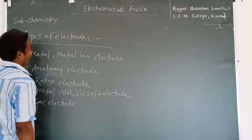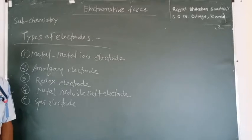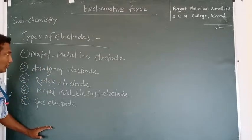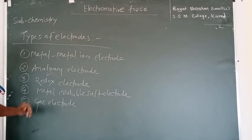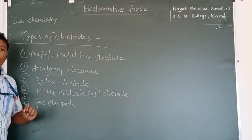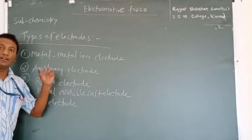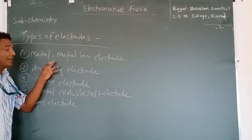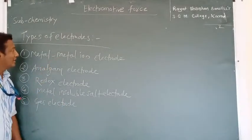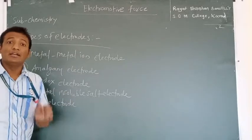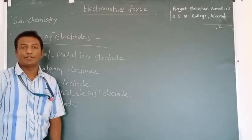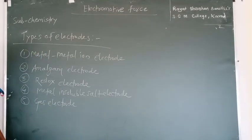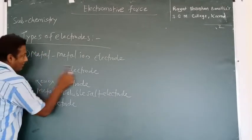These are the five types of electrodes in our syllabus — very important from an exam point of view. For each electrode we will see: first, the representation of that electrode; then the electrode reaction that takes place; then the Nernst equation for that electrode; and finally, on which activity the potential depends.